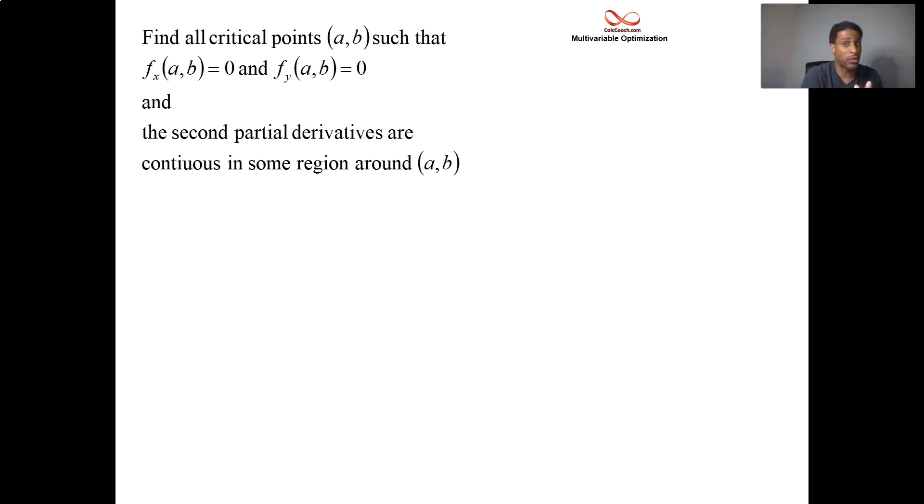So if you do have a critical point, first go find your critical points. And then when it's time to classify them, you want to look at the second partial derivatives. You create this calculation - has many different names, but I'm going to call it a capital D for discriminant. But you might see other places call it the Hessian. It's this matrix where you have the double X and the double Y partials multiplied by each other, and then the mixed partial is multiplied by itself, it's squared.